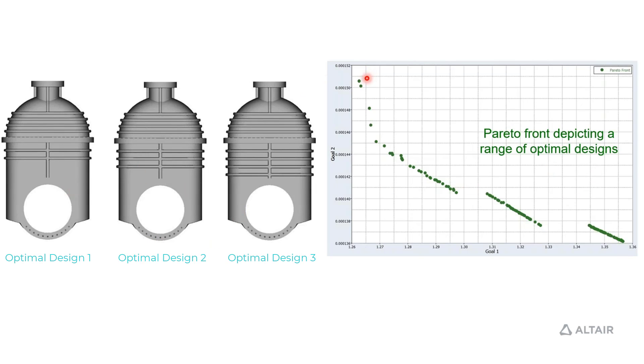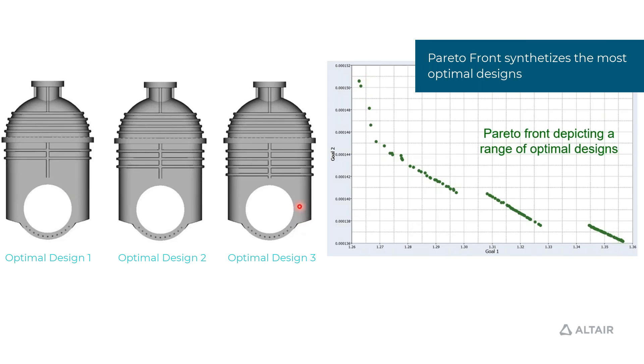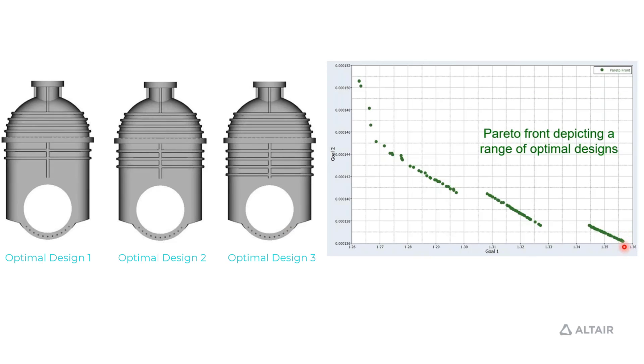The first one lies somewhere here where it is the best pertaining to goal two. Optimization design three is lying somewhere here which is the best of goal one. But what we have chosen is optimal design two, the best design which is the best of both objectives.